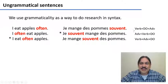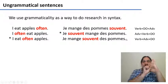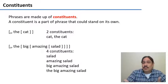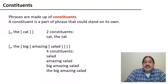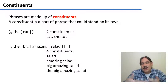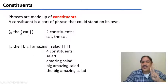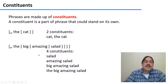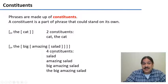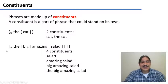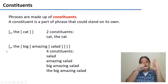This is what makes the differences between languages: the collection of syntactic rules that you have. Phrases are made up of constituents — these are phrases that could stand on their own. For example, the phrase 'the cat' has two constituents: 'cat' and 'the cat.' The phrase 'the big amazing salad' has four constituents: 'salad,' 'amazing salad,' 'big amazing salad,' and 'the big amazing salad.' Constituents are parts of the phrase that could be like their own mini phrase.